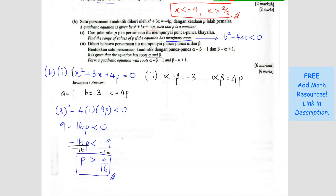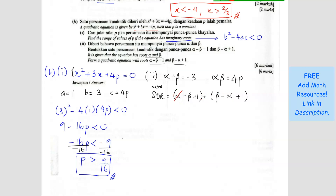The question asks us to form a new quadratic equation with new roots. The new sum of root is (alpha minus beta plus 1) plus (beta minus alpha plus 1). Alpha and negative alpha cancel, negative beta and positive beta cancel, leaving 1 plus 1 equals 2. So the new sum of roots is 2.